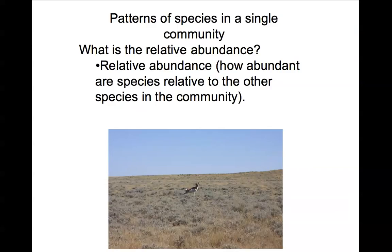One thing we haven't talked much about, and haven't addressed in any of our homeworks, is relative abundance. I'm going to introduce the concept of relative abundance in a single community, where you can then compare the relative abundance of species across communities. Relative abundance is how abundant or frequent a species is relative to other species in the community.